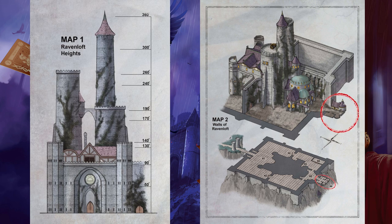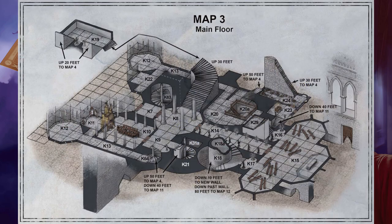Fortunes of Ravenloft: If your card reading indicates an encounter with Strahd in this area — the Executioner, the Jack of Spades — he is looking over the balcony. The Main Floor refers to Map 3 of the castle, Areas K7 through K24.